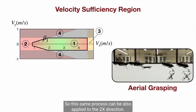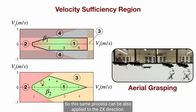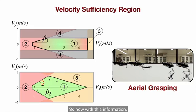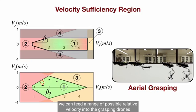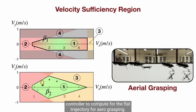So this same process can be also applied to the z-x direction. So now with this information, instead of a specific collision point and specific impact velocity, we can feed a range of possible relative velocity into the grasping drone's controller to compute for the flight trajectory for aerial grasping.